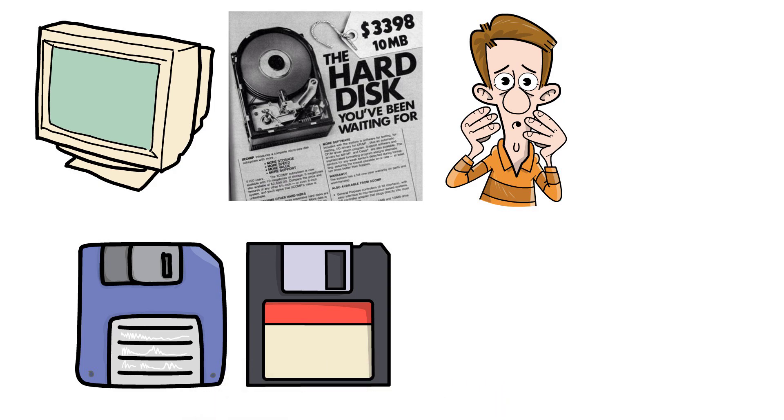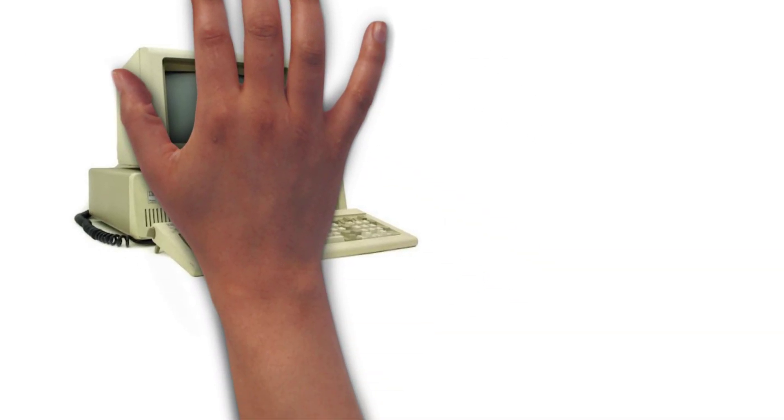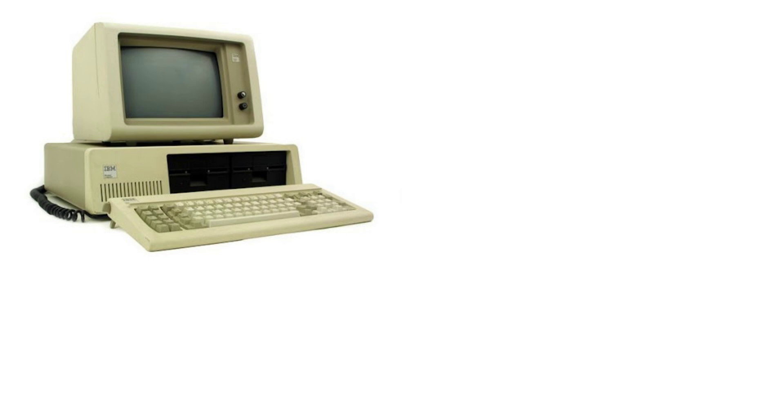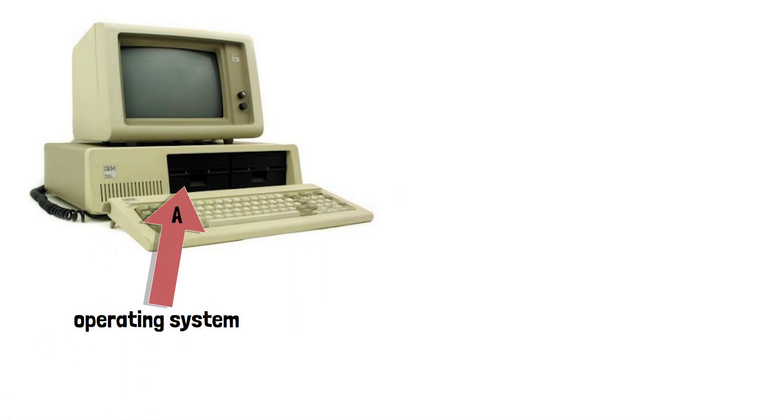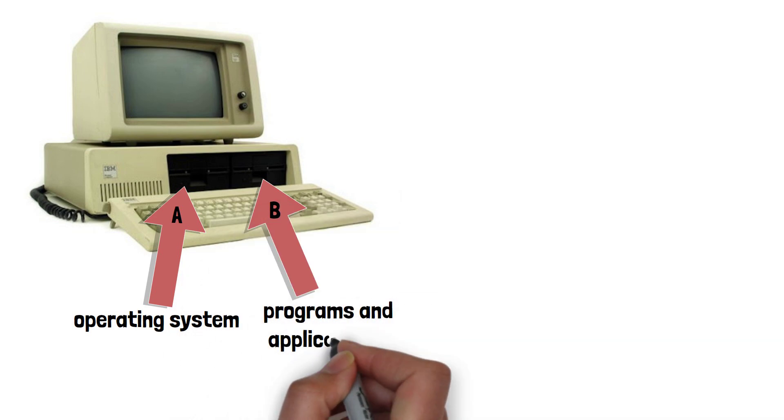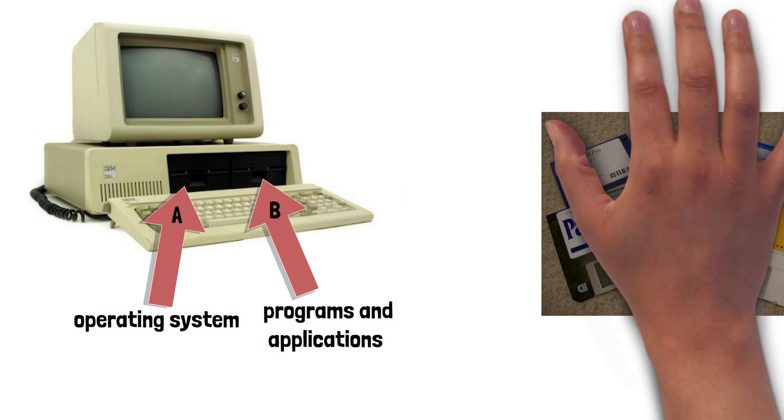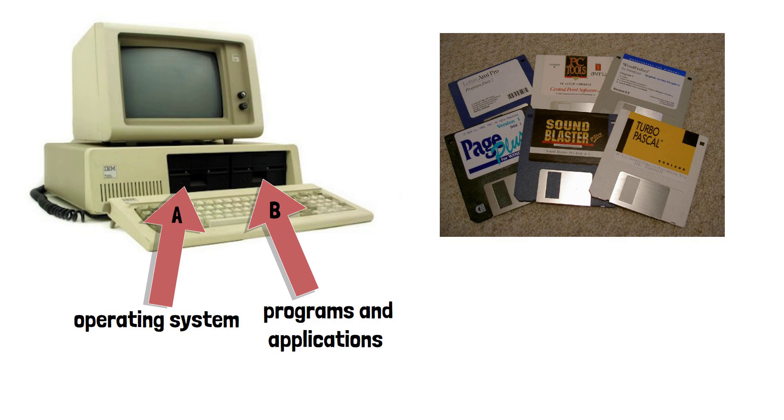In this example, we can see an old computer with two floppy disk drives. The first being the A drive, which the operating system was inserted into, and then the second drive or the B drive for programs and applications. If the user had no internal hard drive and wanted to run a different application, they'd have to remove the program floppy disk from the B drive and reinsert the floppy disk containing their desired program.